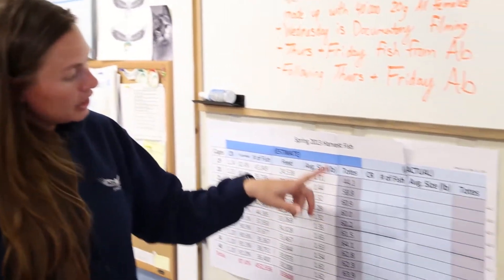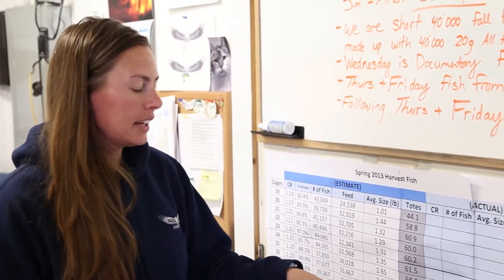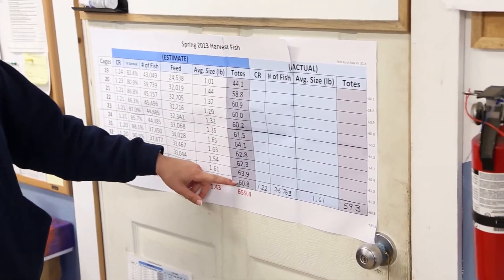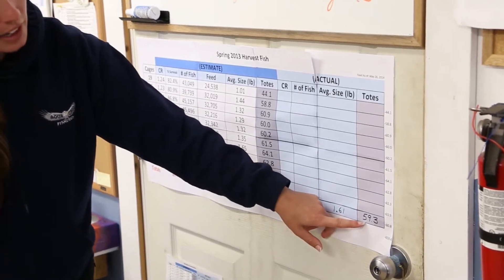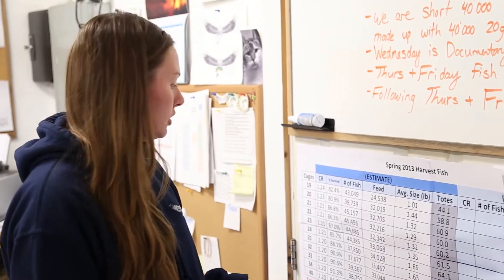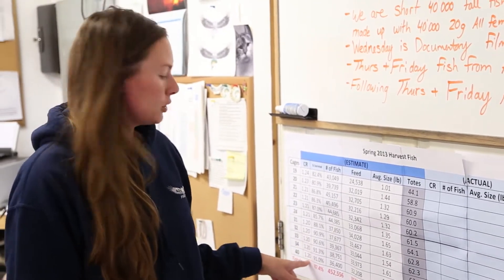And then from that, we estimate how many totes which are what we ship fish in that we will get out of the cage. So you can see we've shipped one cage already with an estimated 60.8 totes and we got 59.3 which is pretty accurate based on our estimation so we know that our conversion rate is pretty close. And that's always great.